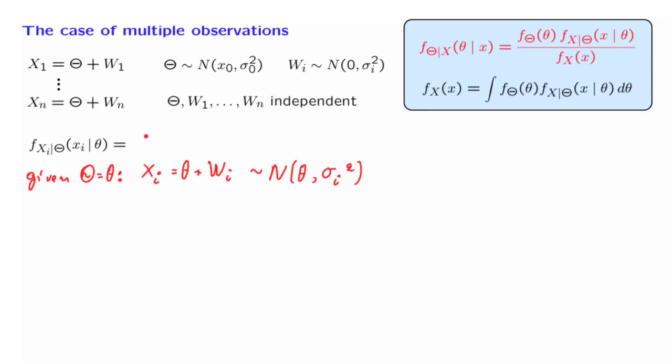And so we can now write down the conditional PDF of xi. There's going to be a normalizing constant, and then the usual exponential term, which is going to be xi minus the mean of the distribution, which is theta, and then we divide by the usual variance term.